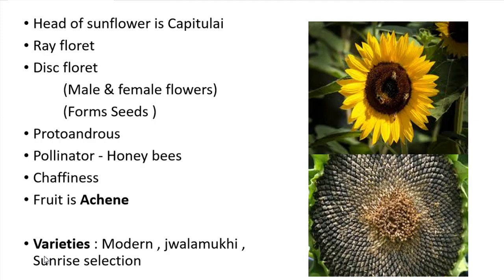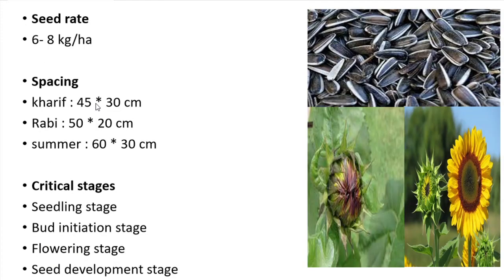The seed rate for sunflower is 6 to 8 kg of seeds per hectare. Sunflower can be grown in all three seasons: Kharif, Rabi, and summer. The recommended spacing for all three seasons are: for Kharif season 45 x 30 cm, for Rabi season 50 x 20 cm, and for summer 60 x 30 cm.